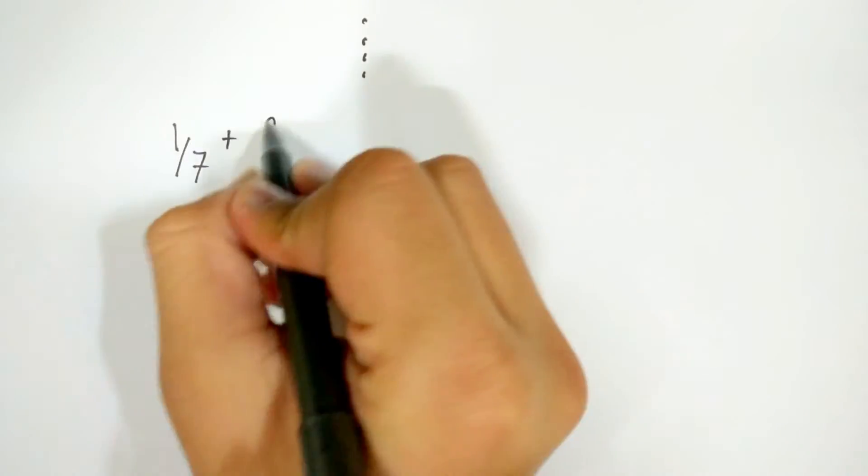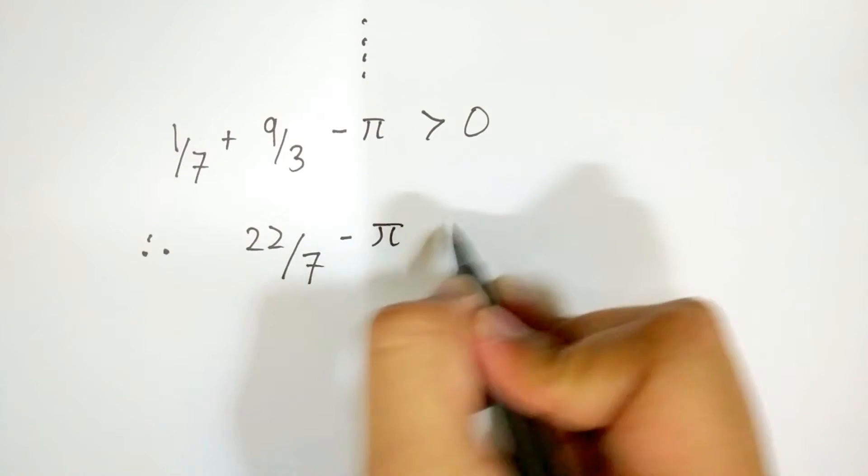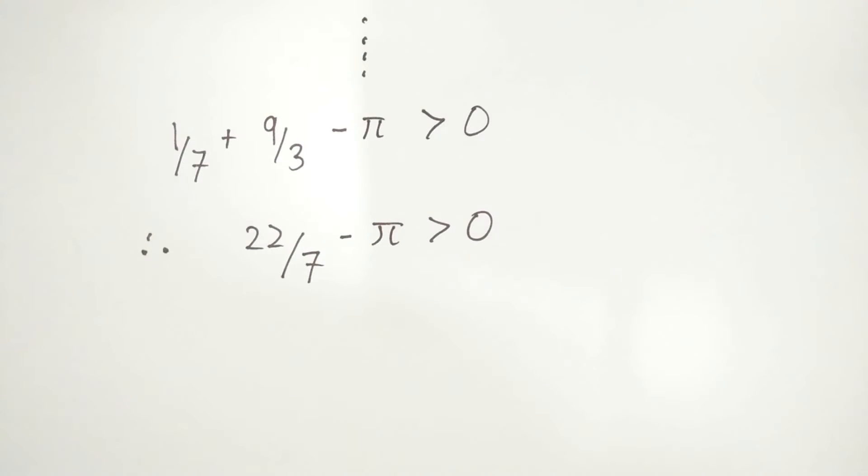Now, you know that we chose this particular equation because it gives 22 over 7 and pi in the end result. Continuing the maths, we get to the result pi is less than 22 upon 7.